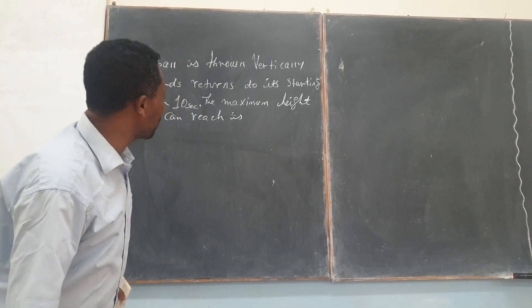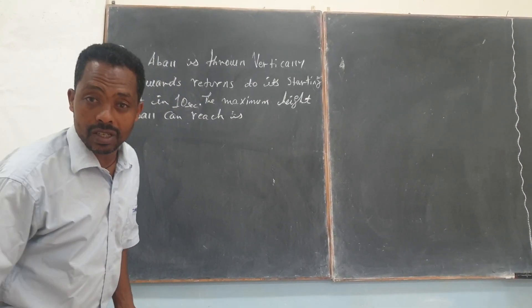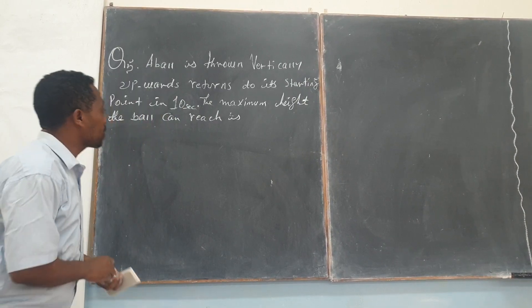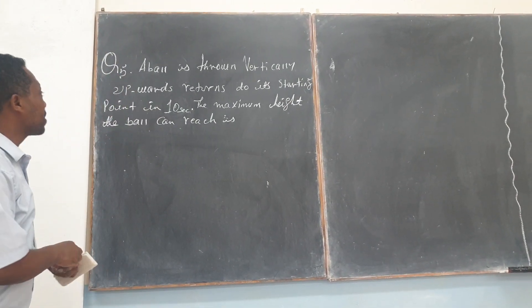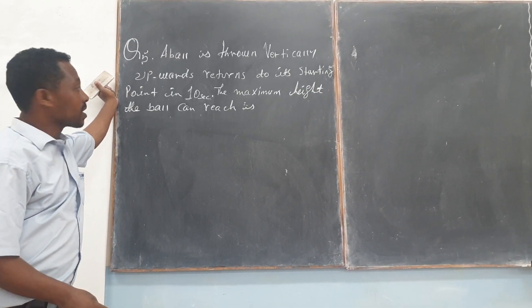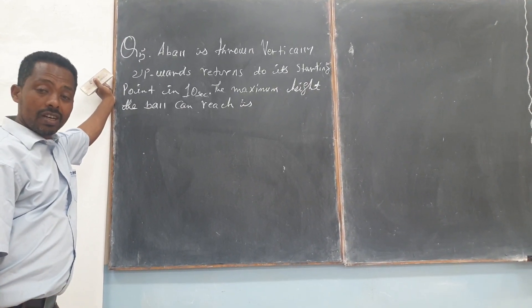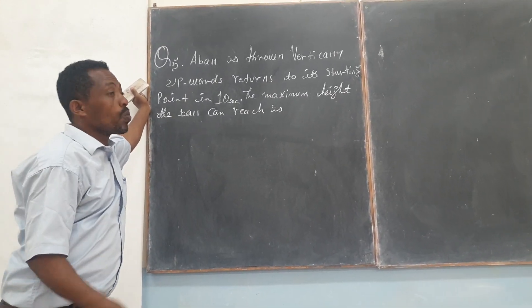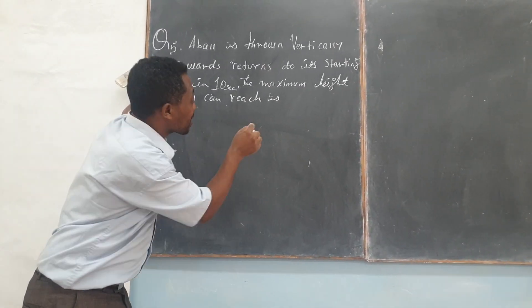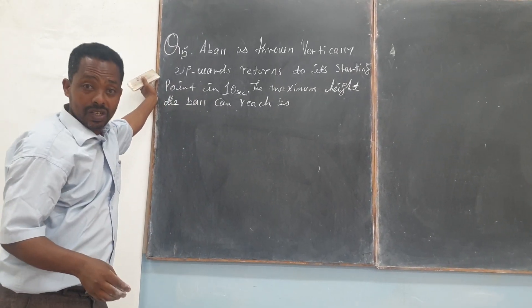Now I'm requested to solve this kinematics problem. Can we do it together please? Go ahead. Please come in. The problem says the ball is thrown vertically and returns to its starting point after 10 seconds. So we're requested to find the maximum height the ball can reach.